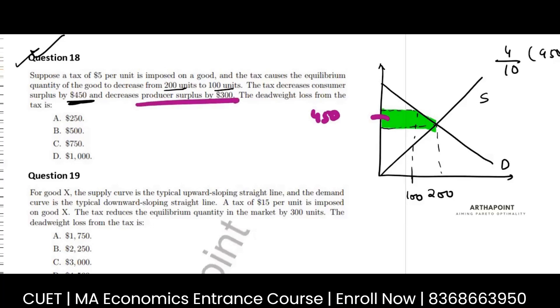And decreases producer surplus by 300. So the other part is also given to me. This area. This part. This is given to me as 300.